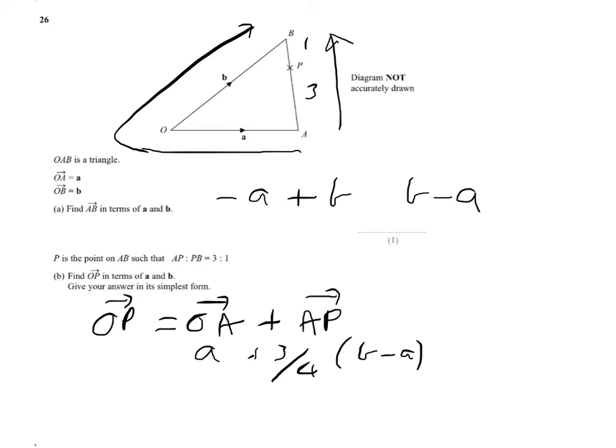So that's going to give you A minus 3 quarters of A. So that's going to give you a quarter of A plus 3 quarters of B.